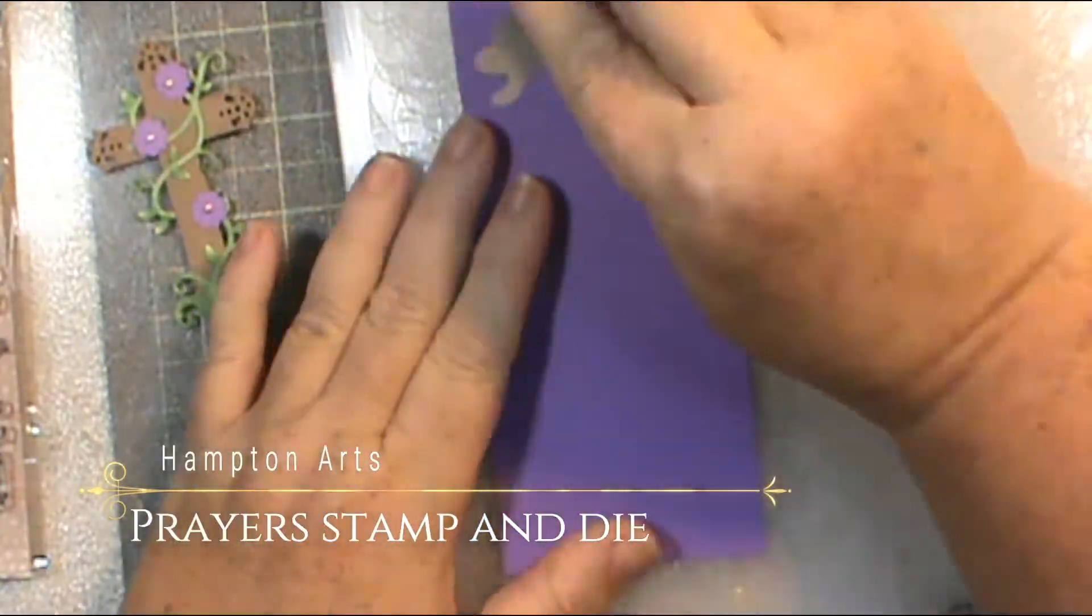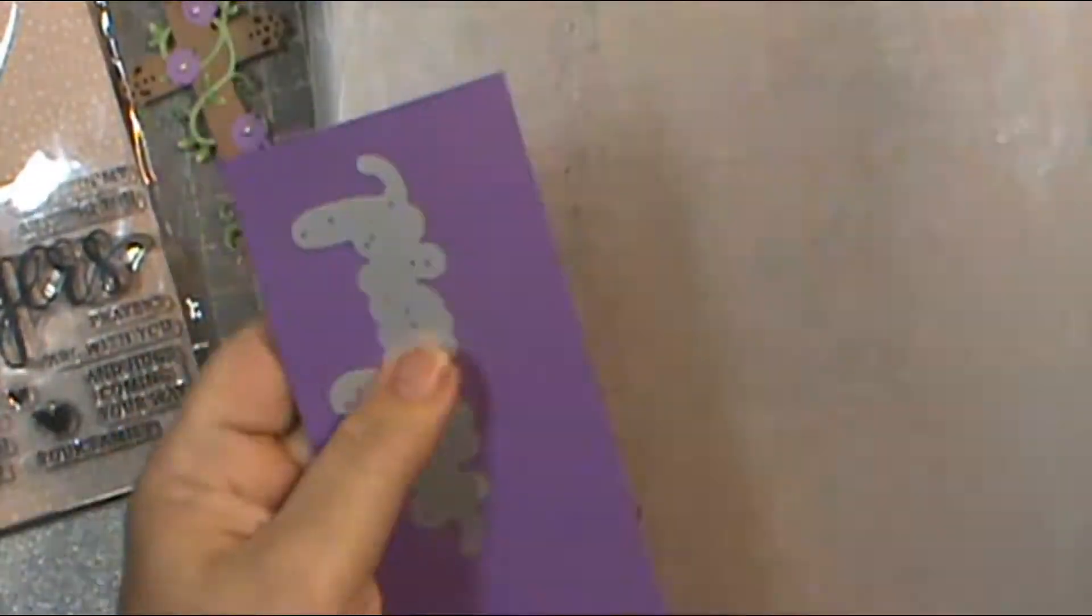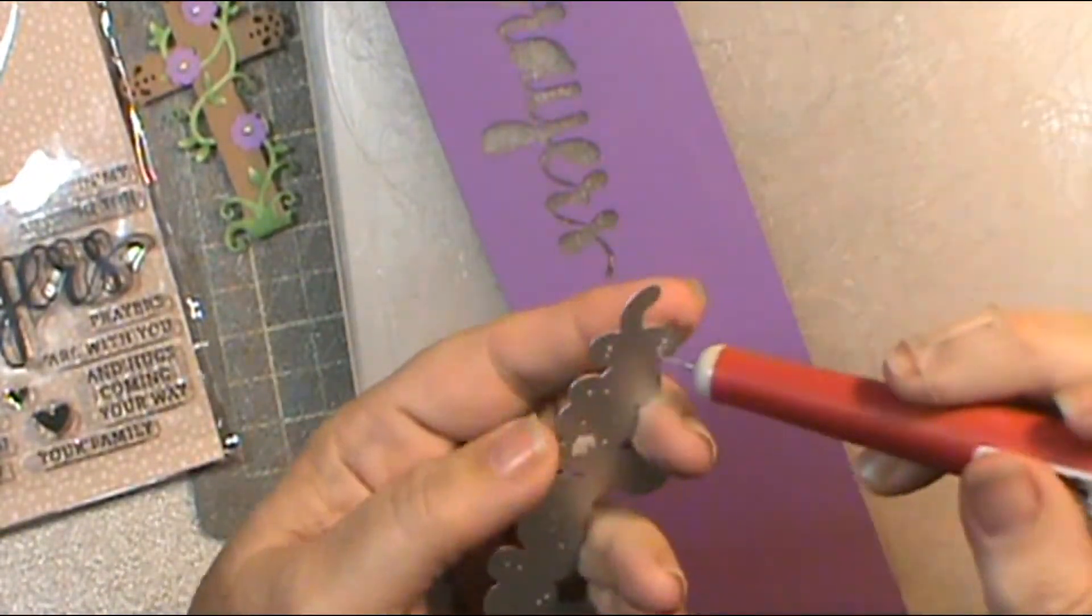We're going to start with the Cross with Vine and then I'm going to use the Hampton Arts Prayer Stamp and Die Set. I'm just going to use the die and I'm getting the word prayers. I tap it there and it's in there pretty snug.